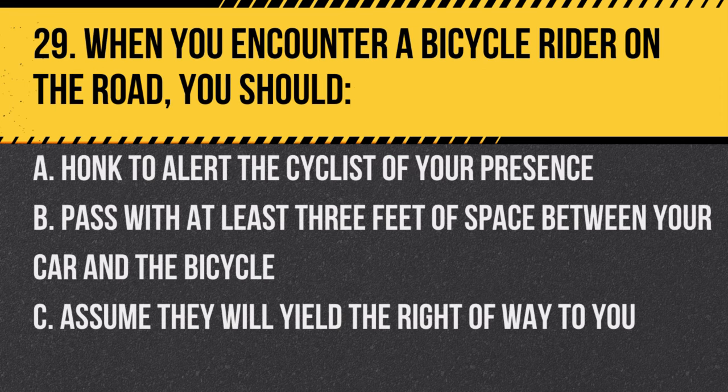Question 29. When you encounter a bicycle rider on the road, you should: a. Honk to alert the cyclist of your presence. b. Pass with at least three feet of space between your car and the bicycle. c. Assume they will yield the right-of-way to you. Answer: b. Pass with at least three feet of space. This ensures safety for both the driver and the cyclist.